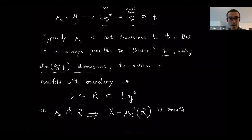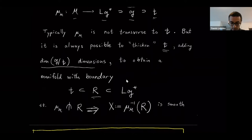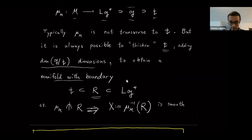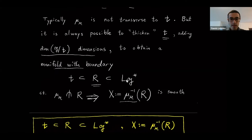I'm going to call this space that's transverse to the moment map R. It's going to be a manifold with boundary — its geometry is very simple. Once you have something transverse, you can take its inverse image under the moment map. That will be a nice smooth submanifold. Because of the transversality it will be smooth, and because of the properness of the moment map it will be finite dimensional. I've put this in a yellow box because this space X equals mu-inverse(R) will be very important through the rest of my talk.